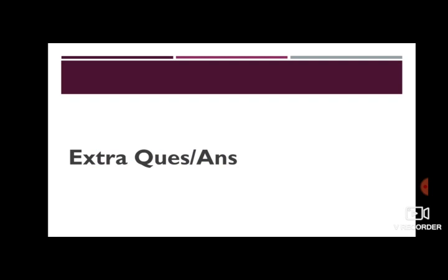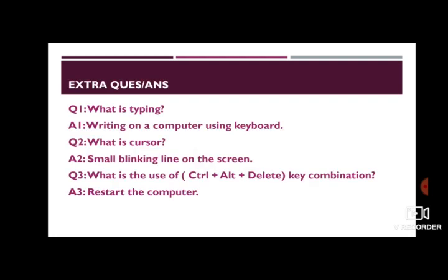Next we are going to do extra question answers. Extra question answers, question number one. What is typing? Writing on computer using keyboard. Then what is cursor? Small blinking line on the screen or on the monitor. Both are correct.